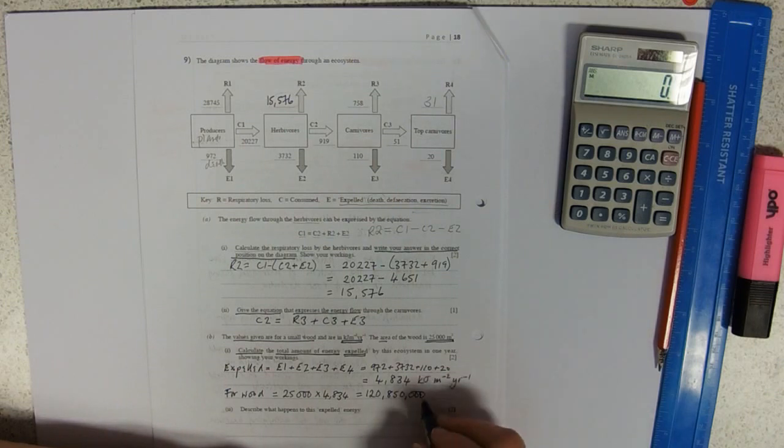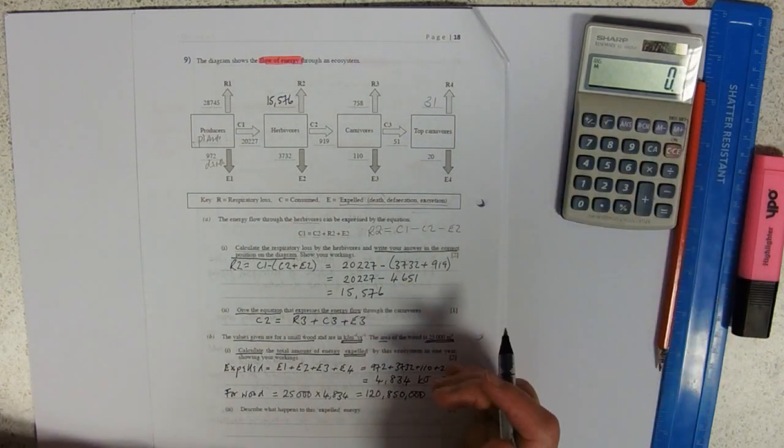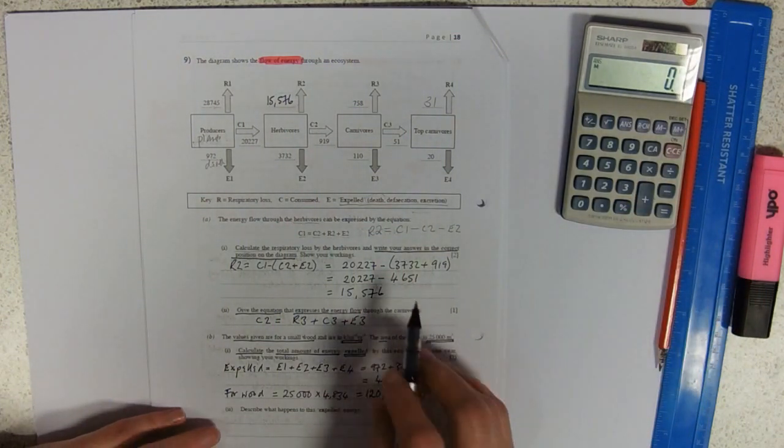...10 to the power 8, because you've got 1, 2, 3, 4, 5, 6, 7, 8 decimal places where you put your 1.2 in.